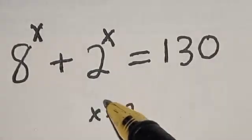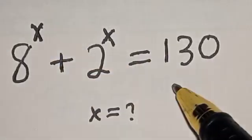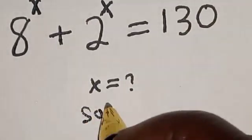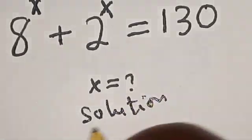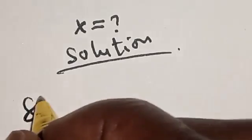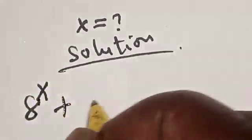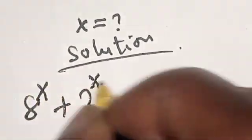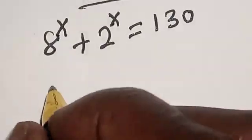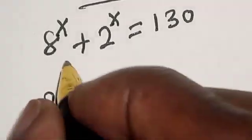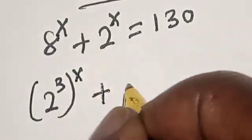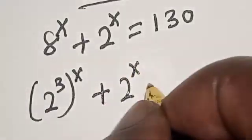Please don't forget to like, share, comment and subscribe. Solution: we have the equation 8 raised to power s plus 2 raised to power s is equal to 130. Now, 8 raised to power s can be written as 2 raised to power 3, raised to power s, plus 2 raised to power s is equal to 130.